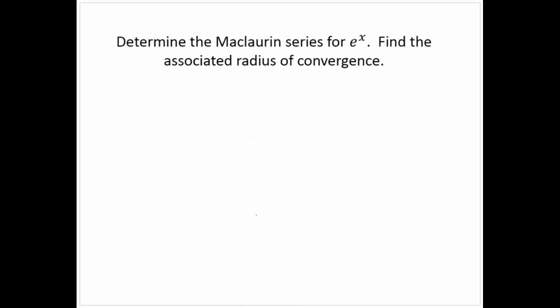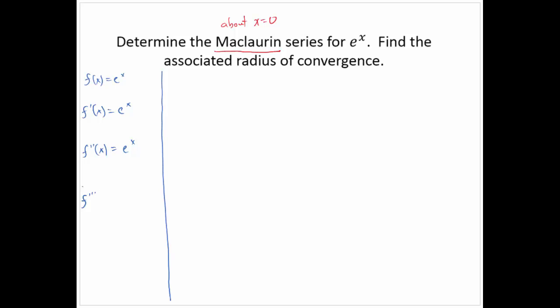Determine the Maclaurin series for eˣ and find the associated radius of convergence. Since it's a Maclaurin series, we expand about x = 0. If f(x) = eˣ, then f′(x) = eˣ, f″(x) = eˣ, and in fact the nth derivative of eˣ is eˣ. So f(0) = e⁰ = 1, f′(0) = 1, f″(0) = 1, and in general f⁽ⁿ⁾(0) = 1.